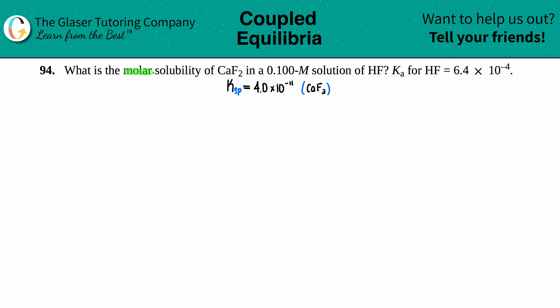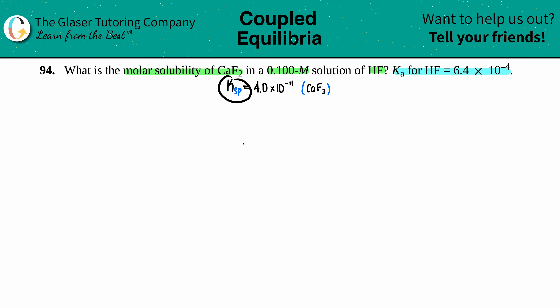Number 94: what is the molar solubility of CaF₂ in a 0.100 molar solution of HF? They tell us that the Ka for HF is 6.4 times 10 to the negative fourth. We're going to use that in a little bit. However, they're looking for the molar solubility of a different compound — calcium fluoride. Molar solubility and saturated solutions have to do with Ksp values, so I went into the back of the book to find the Ksp value for CaF₂, which is 4.0 times 10 to the negative 11th.